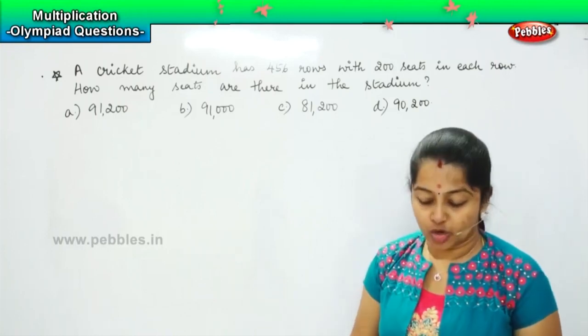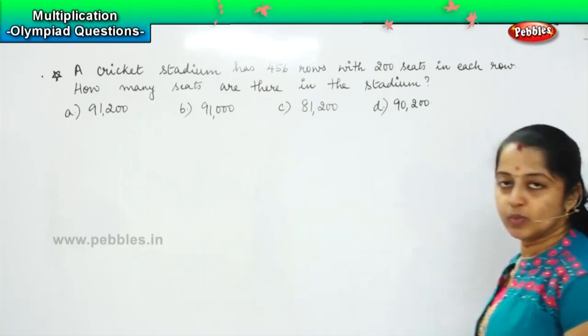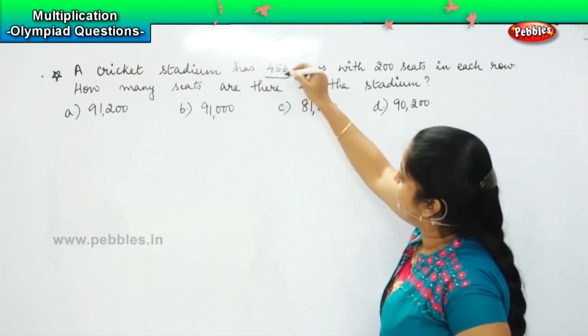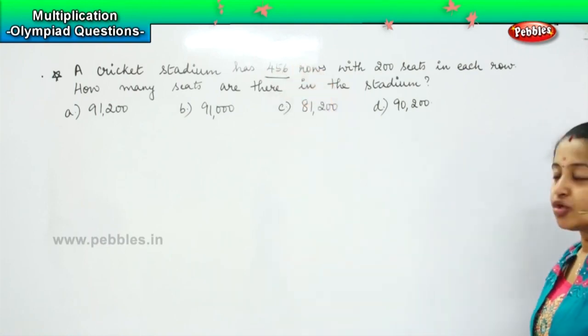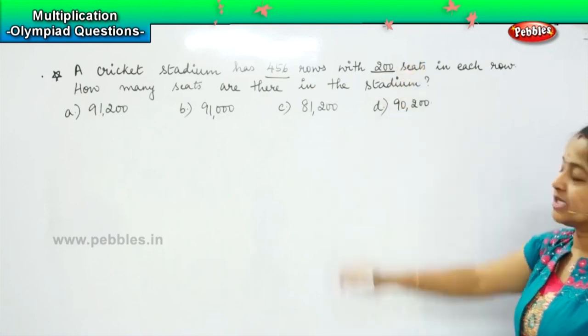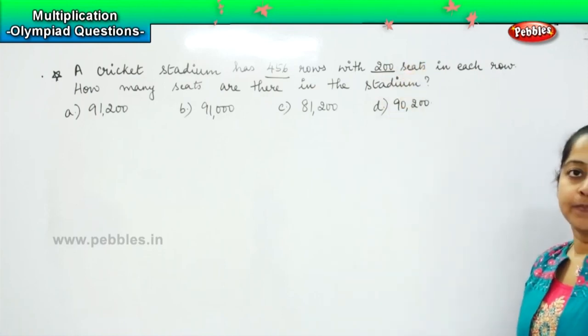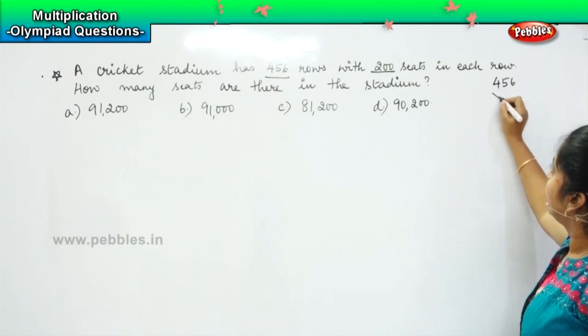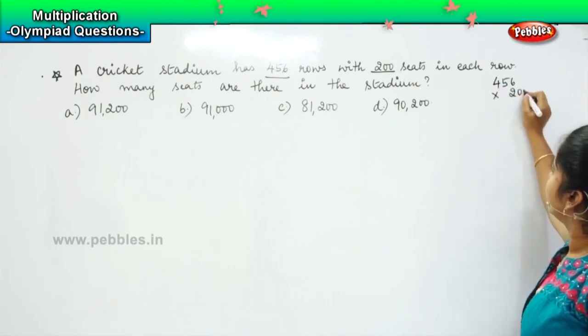So how will you solve this question, children? Very simple multiplication, right? A cricket stadium has 456 rows and each row has got 200 seats. So we have to calculate how many seats are there in all. So, 456 into 200.